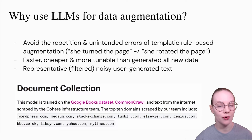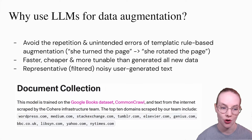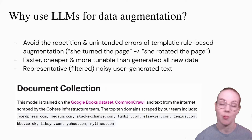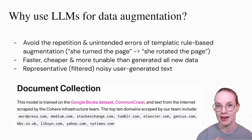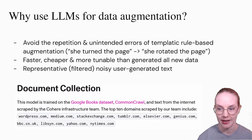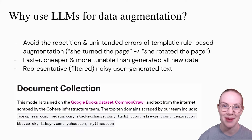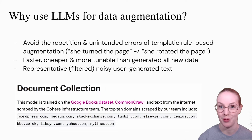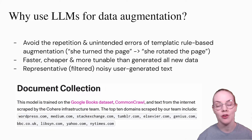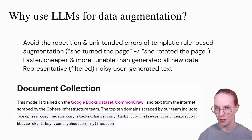So if you know you need to do data augmentation, why would you use large language models over something like translating to and from another language? One of the biggest benefits is you can avoid the repetition in template-based data augmentation. Template-based data augmentation usually has more or less the same syntactic structure, and you can sometimes get weird edge errors where a human probably wouldn't say that.